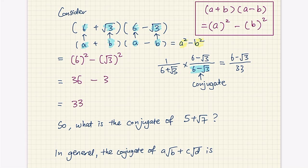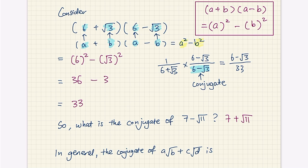So the conjugate of 5 plus root 7 would be 5 minus root 7. And if we're asked what is the conjugate of 7 minus root 11, the conjugate would be 7 plus root 11. Generally speaking, the conjugate of a root b plus c root d would be a root b minus c root d, and likewise if the sign is minus, the conjugate has a plus.